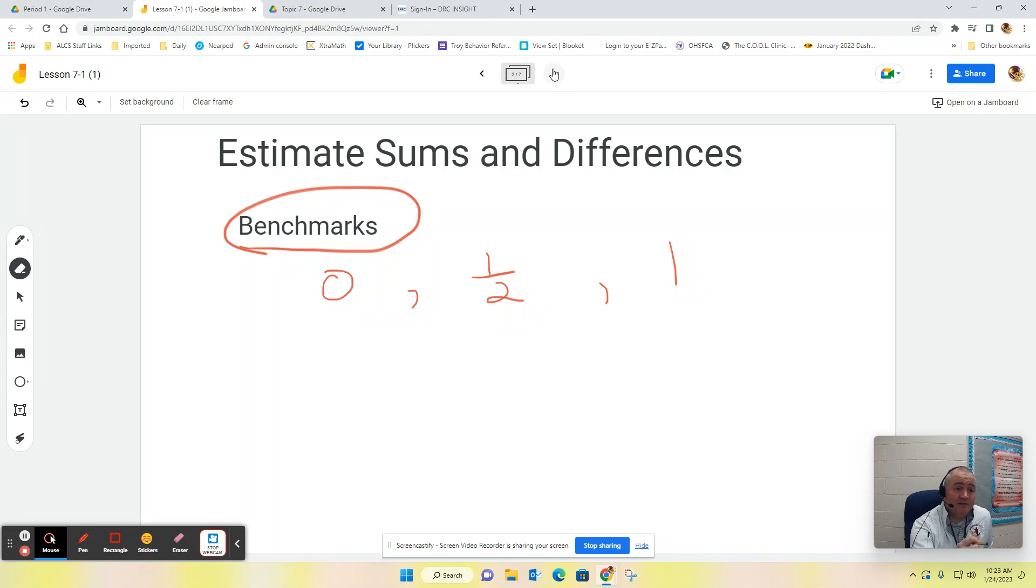We're trying to say, okay, is this fraction closer to zero, closer to a half, closer to a whole? So sometimes, and this will be for the plus kids, sometimes you'll be able to use intermittent benchmarks, which would be like one-fourth, that is between zero and a half, and then three-fourths, that is between one-half and one whole. But for the most part, most of the time in sixth grade, we are going to focus on just those three.